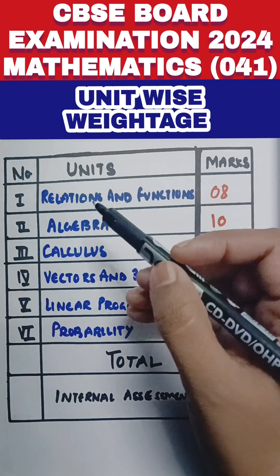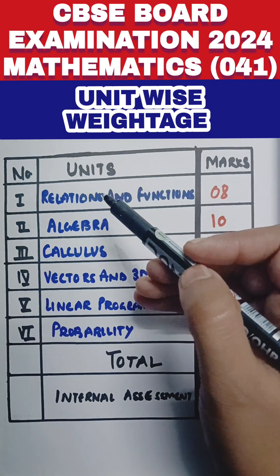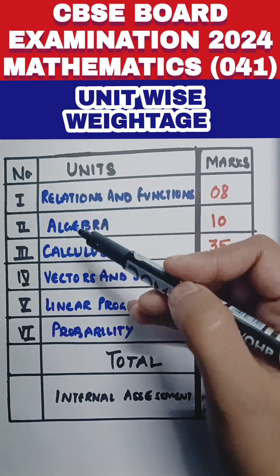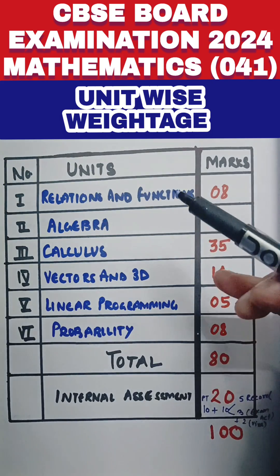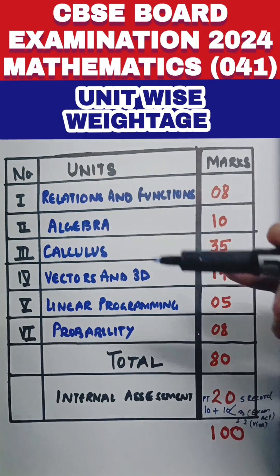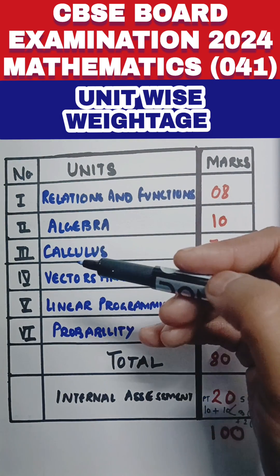Students, here we will discuss the most important part of your Class 12th Maths board examination — that is chapter-wise or unit-wise weightage. You know your paper will come for 80 marks, so you should know what chapter-wise weightage the board has assigned.